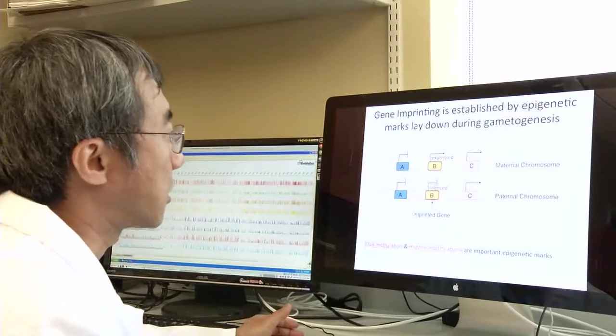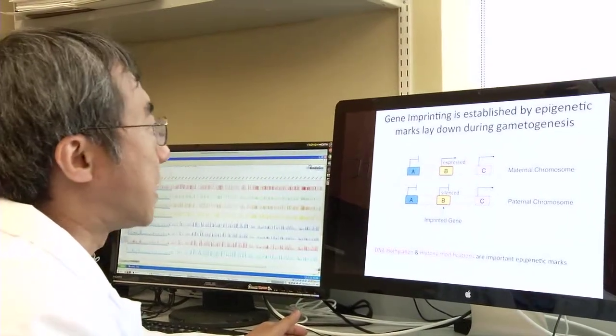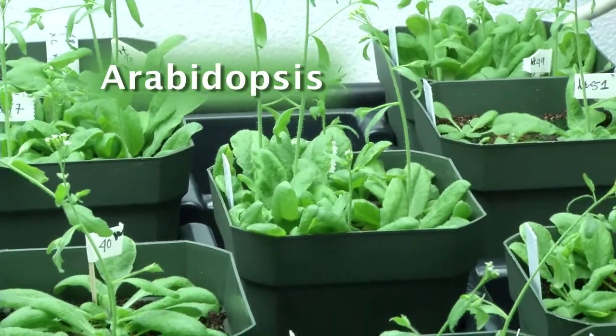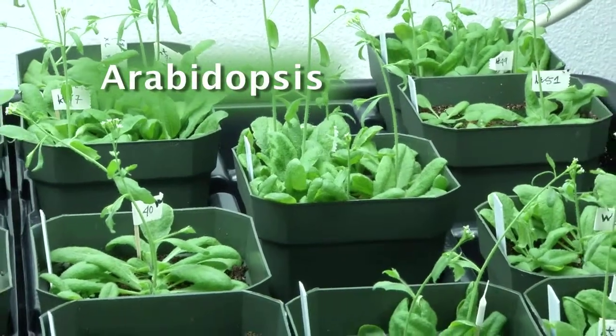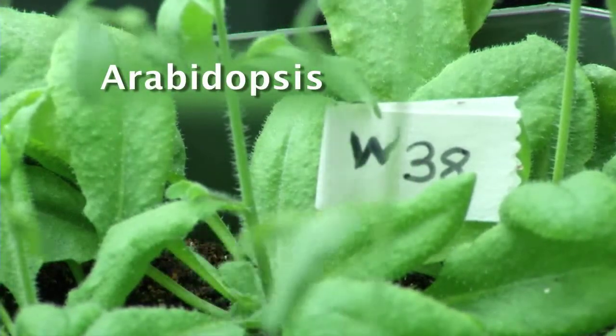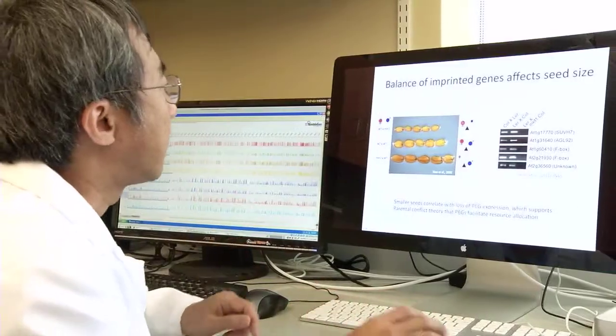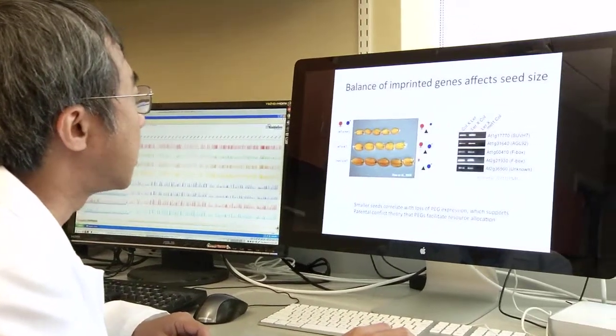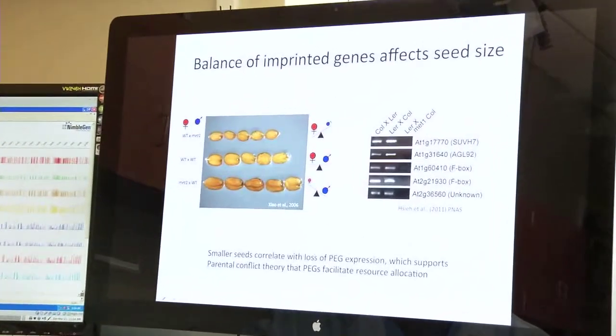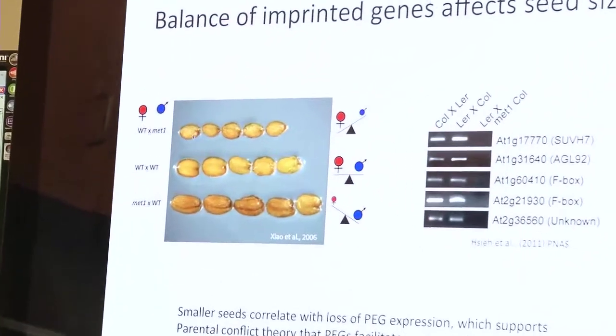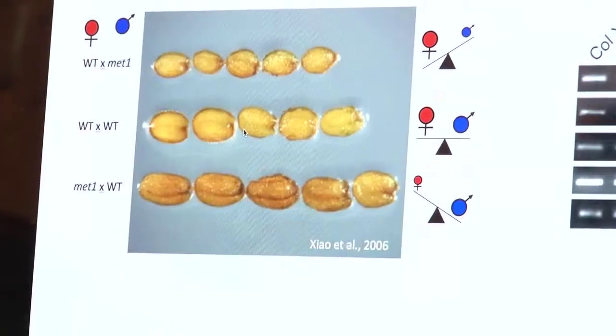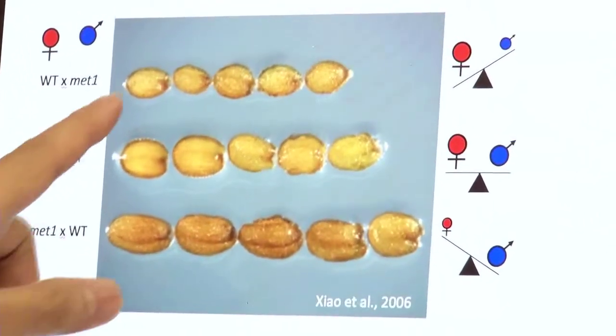I study imprinted genes using Arabidopsis as a model system. We know from work done in this model system that if we affect the activity of these imprinted genes, either by increasing or decreasing their activity, we can produce either larger or smaller seeds. This has practical implications.